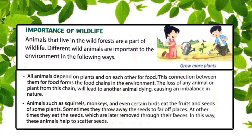Wild animals also help to scatter seeds. Animals such as squirrels, monkeys, and certain birds eat the fruit and seeds of some plants and sometimes throw seeds to faraway places. At other times, they eat the seeds which are later removed through their droppings. In this way, these animals help to scatter seeds.